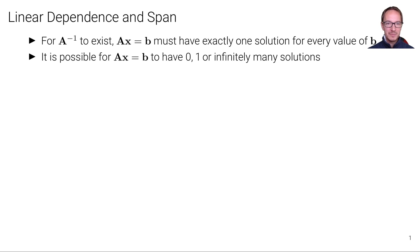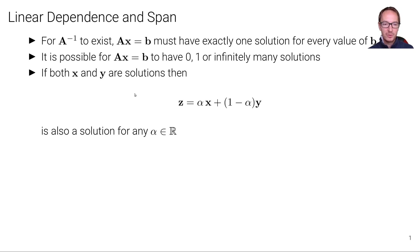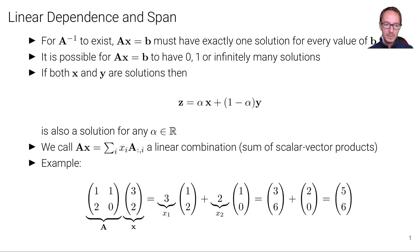It is possible for Ax equals b to have 1, 0, or infinitely many solutions. If both x and y are solutions of that linear system, then a third vector c, which is a linear combination of x and y, is also a solution for any alpha in the real numbers. We call Ax, the sum of the elements of x times the individual columns of A, a linear combination — a sum of scalar-vector products.